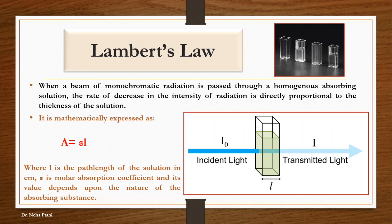If you see Lambert's law, the name is obviously because of Mr. Lambert. It is about ultraviolet spectroscopy and the interaction of matter with light. Here, when a beam of monochromatic radiation is passed through a homogeneous absorbing solution, we use a cuvette — this glass tube you can see in the picture. Cuvettes are cylinders which can be made of plastic, quartz, or glass. Normally quartz or glass is used. The cuvette is transparent on two sides and opaque on two sides, so light passes through the transparent sides.